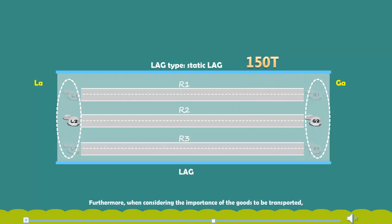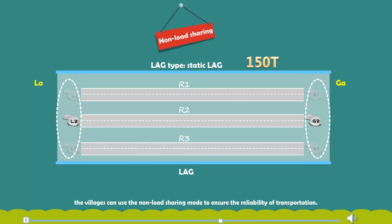Furthermore, when considering the importance of the goods to be transported, the villagers can use the non-load sharing mode to ensure the reliability of transportation. The non-load sharing mode is similar to traffic control and allows goods to be transported only over one of the roads R1 to R3.